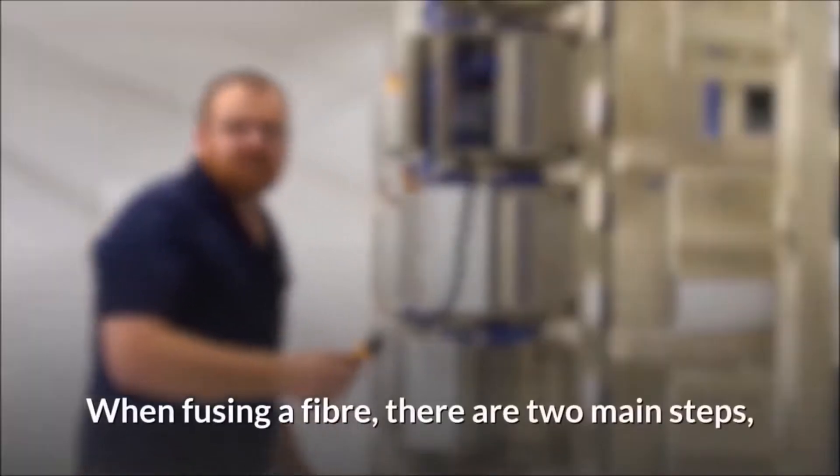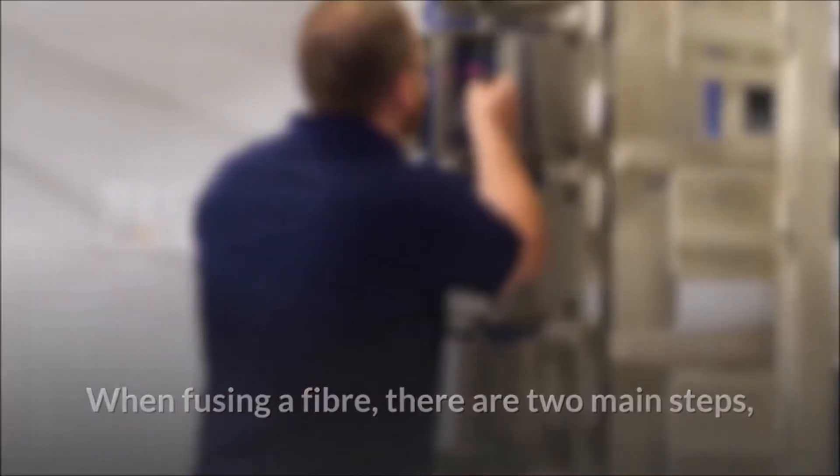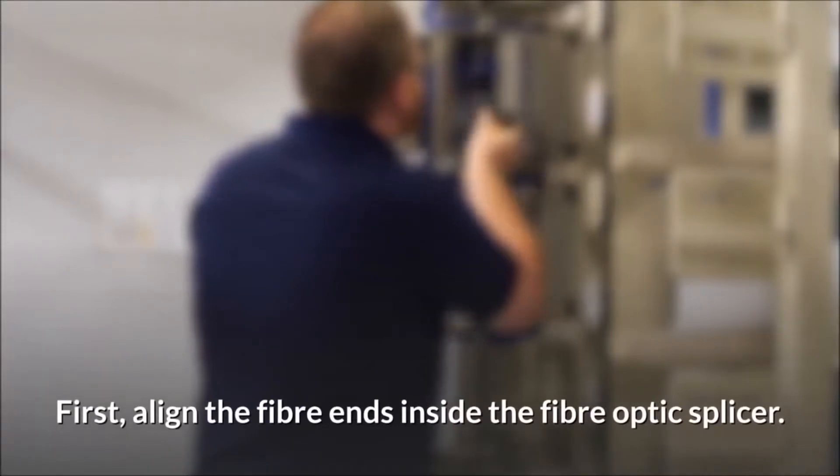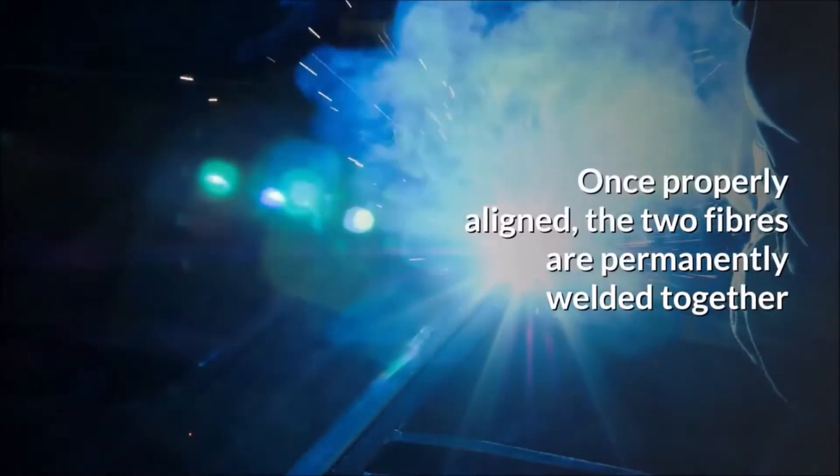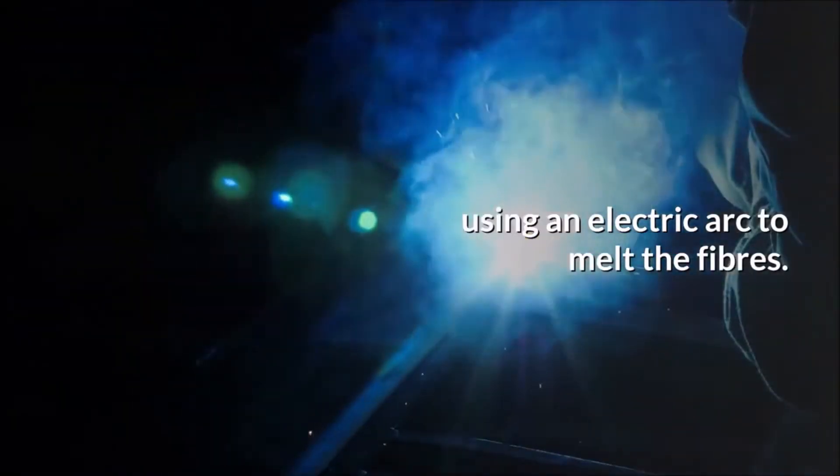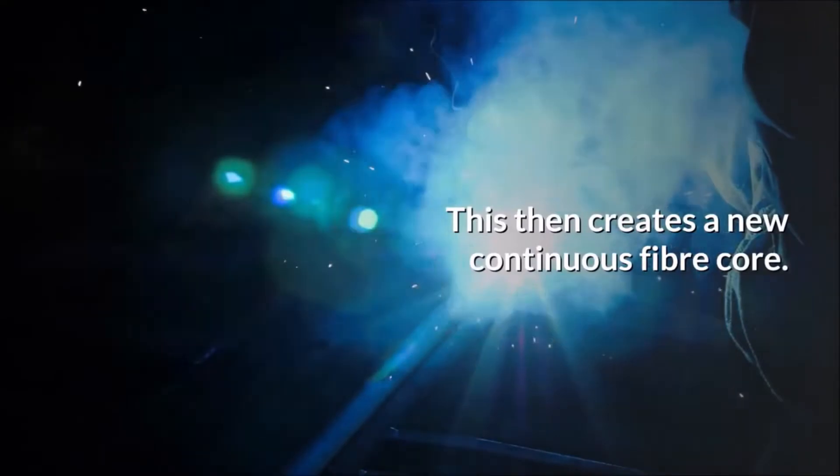Step 3: When fusing a fiber, there are two main steps, alignment and melting. First, align the fiber ends inside the fiber optic splicer. Once properly aligned, the two fibers are permanently welded together using an electric arc to melt the fibers. This then creates a new continuous fiber core.